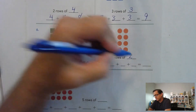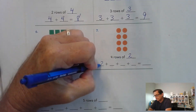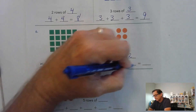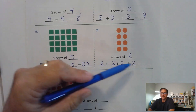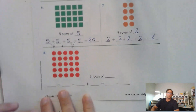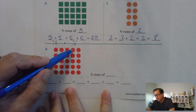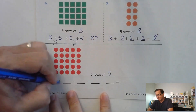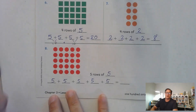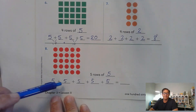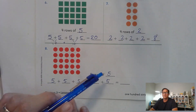Four rows of two — just skip count by twos: two, four, six, eight. How many are in each row here? One, two, three, four, five. So we have five rows of five. Let's skip count by five: five, ten, fifteen, twenty, twenty-five. Five rows of five is twenty-five.